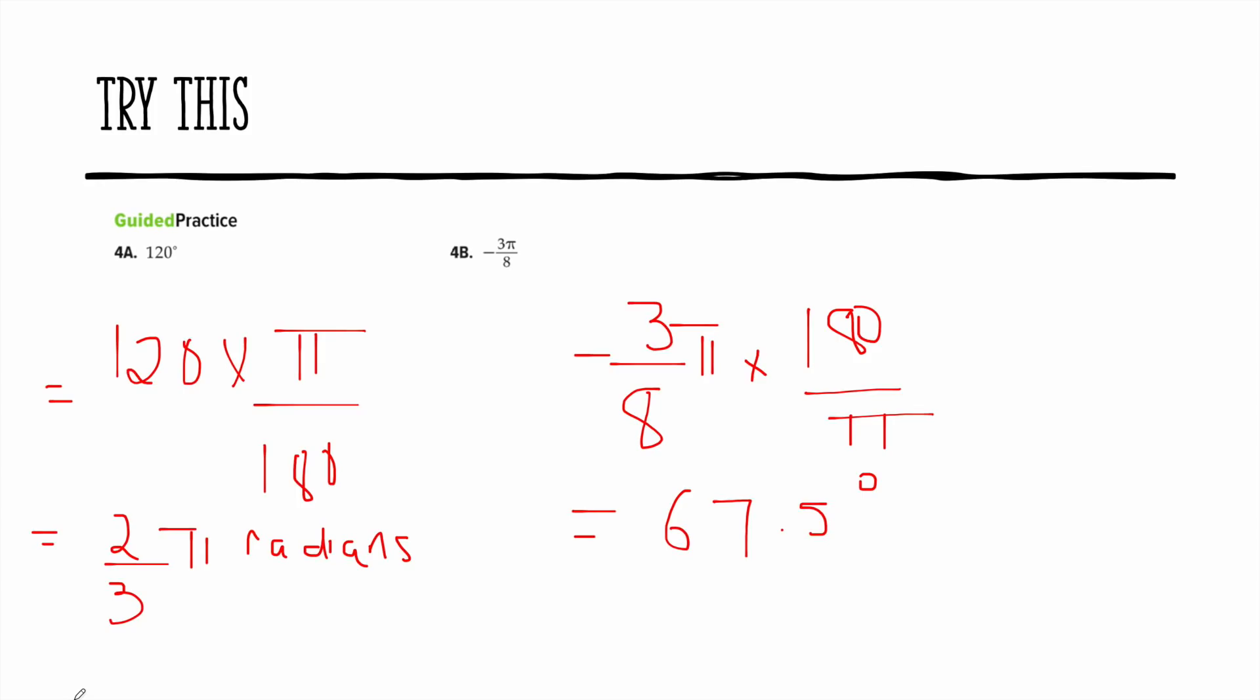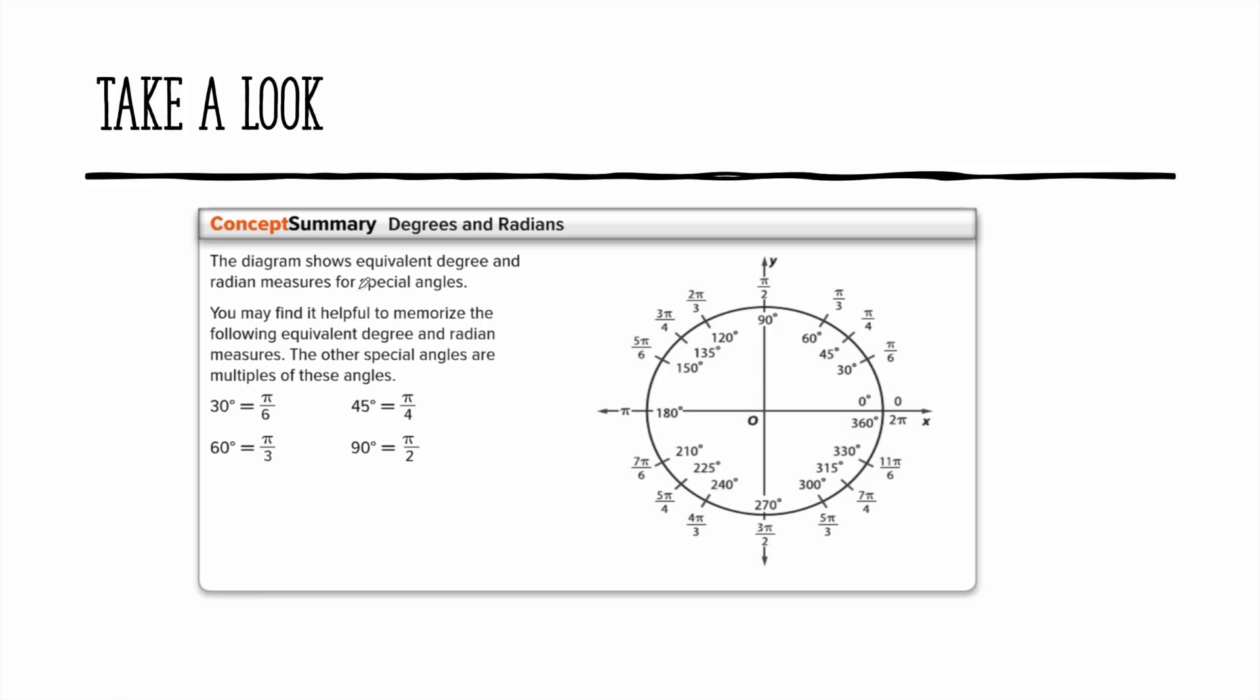All right guys, I hope this lesson was easy for you to understand because it's straightforward. If you haven't subscribed please subscribe to my channel and you will catch the next video where I'll be showing you how to remember the unit circle, so that you know 0, 30, 45, 60, 90 and the equivalent radians of those angles. Please subscribe to my channel and put the thumbs up if you like the video. Thank you so much, bye bye!